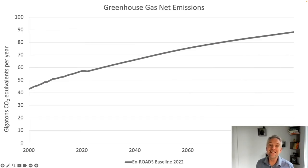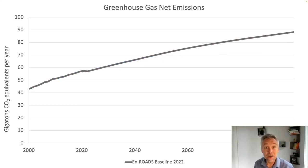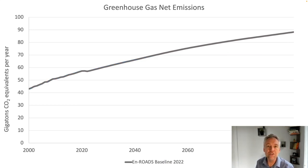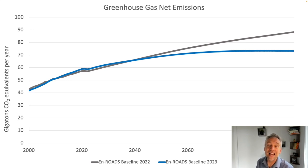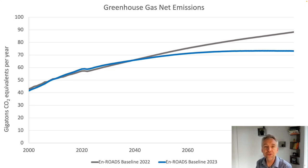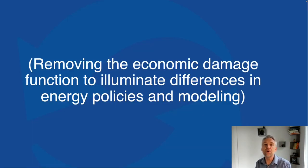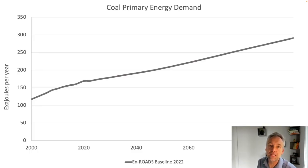Now let's go look and see some of the big changes in this new version of En-ROADS. The big change is that greenhouse gas emissions went down. Here we are in the old version, from 2000 to 2100, and now in the new version, mostly due to the change in the economic damage function. But there are other important contributors. To show you those trends, we removed the damage function so you could really see the energy sector before and after without this change to overall GDP over time.